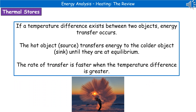When we're considering two different objects with a difference in temperature between them, we will get an energy transfer occurring. The hot object we refer to as the source and the colder object we refer to as the sink. Energy is transferred from the source to the sink until they reach equilibrium — the same temperature. The rate at which energy is transferred is much faster when the temperature difference is greater.